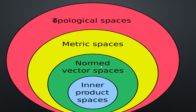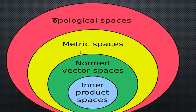Once you have a norm, you can use the norm to define a metric. But not every metric leads to a norm, because to have a normed vector space you must first have a vector space. Every vector space has a zero element, but not every metric space needs a zero element. That is why normed vector spaces are metric spaces, but metric spaces don't have to be normed vector spaces. If you want even more special spaces, you have inner product spaces, where an inner product is defined on a normed vector space.